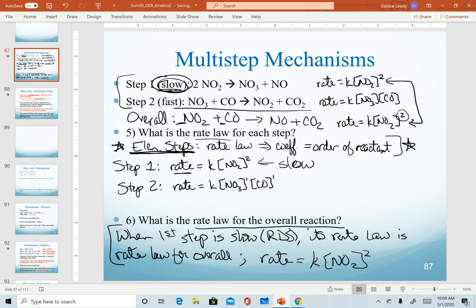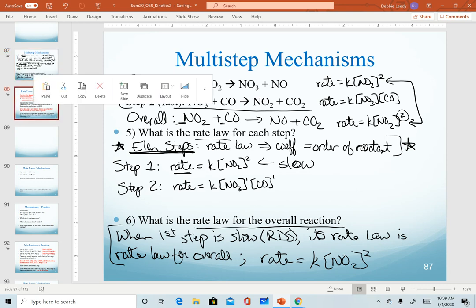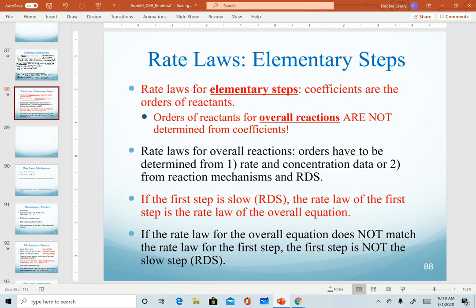So the red ink means that it's very important. Again, when we're writing rate laws for elementary steps, the coefficients are the orders of the reactants. This is not the case for the overall reaction.